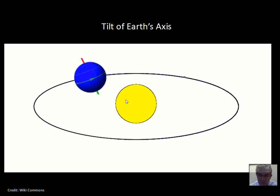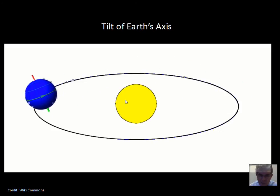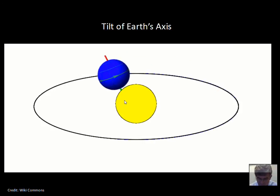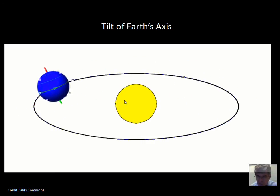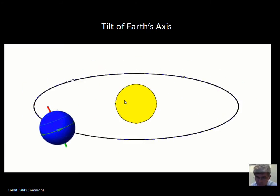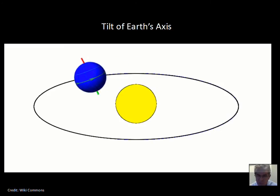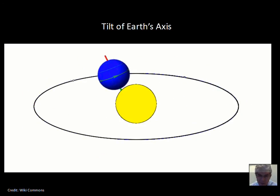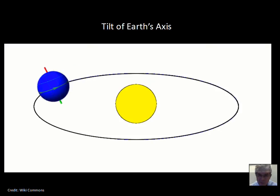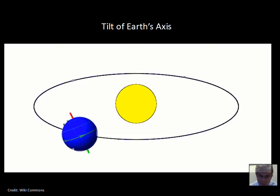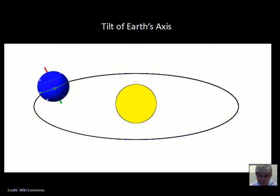The distance from the Sun to the Earth changes about 3% during the course of a year. And we'll emphasize this a few times: the Earth is closer to the Sun in January than it is in July. In July, we're further away. So why is it hot in the Northern Hemisphere in July? Why is it cold in the Northern Hemisphere in January, if that's when we're closest to the Sun?